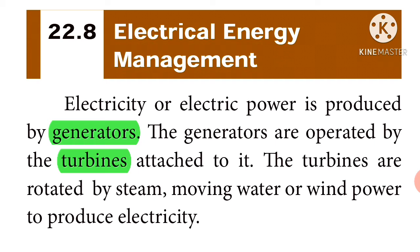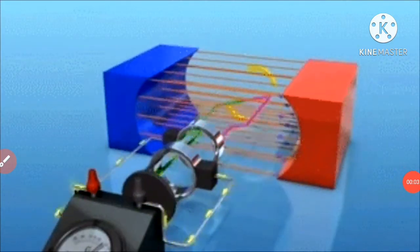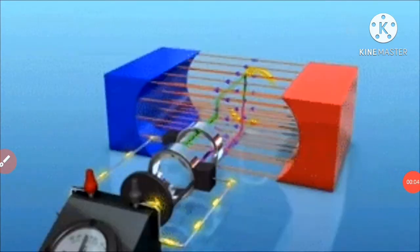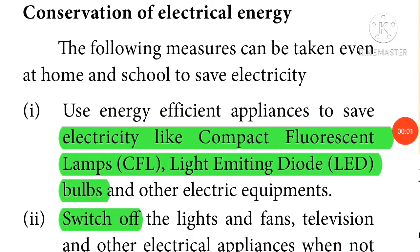To produce electricity, the generator produces min-saram in this manner. Conservation of Electrical Energy — min-natural valangalai saemikka what measures can be taken, let's see.